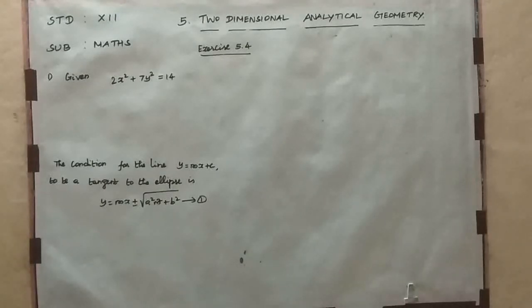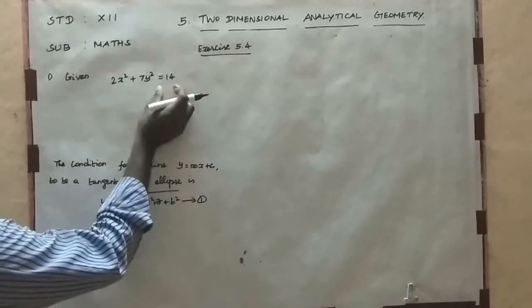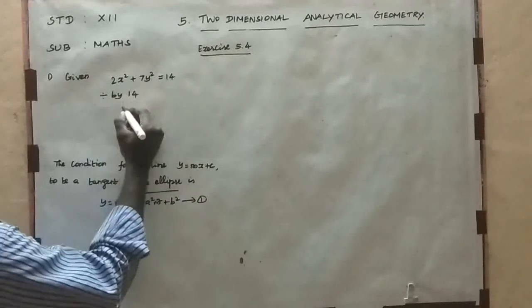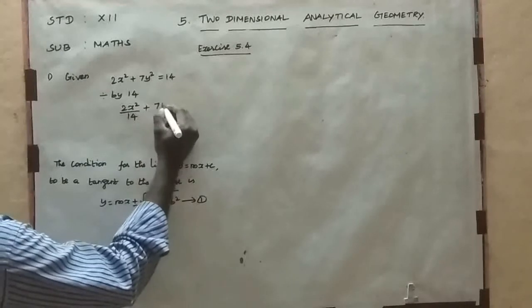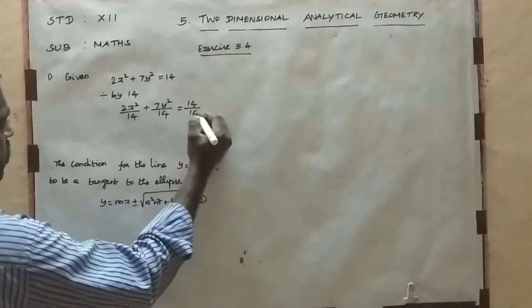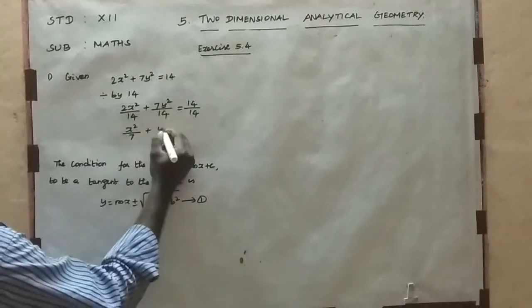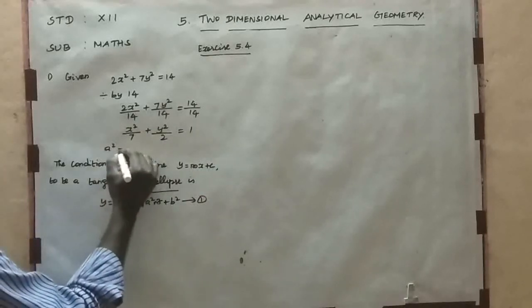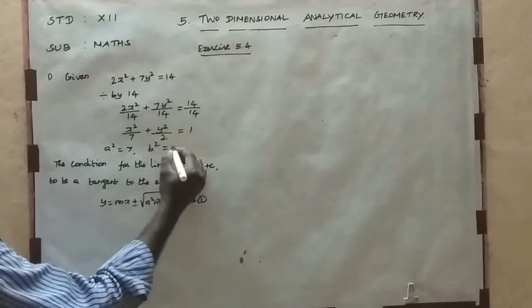Now it is an ellipse. For standard form, the constant value must be 1, so divide both sides by 14. We get x²/7 + y²/2 = 1. So a² = 7 and b² = 2.